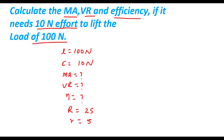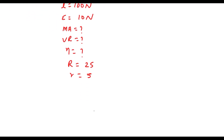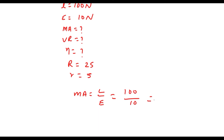In wheel and axle, we know that MA is given by load upon effort. Load is given as 100 and effort is 10, so MA becomes 10.